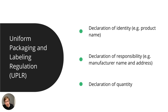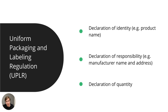Finally, we have the UPLR — the Uniform Packaging and Labeling Regulation — covered by the NIST Handbook, which is published on an annual basis. You need to declare the product identity, product name, declaration of responsibility including manufacturer name and address, and declaration of quantity. There may also be something specific about sizing. Download the latest NIST Handbook from the NIST website — at the time of recording in February 2023, the latest edition had just been published.